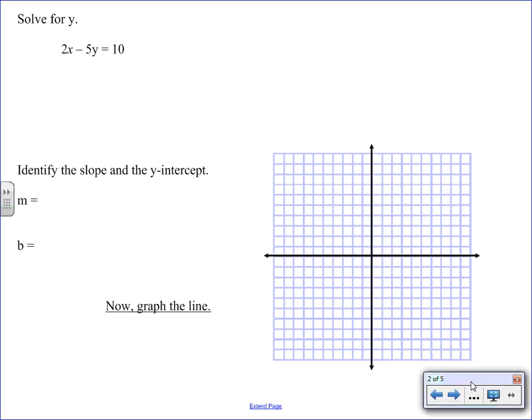If you look at the equation that you're given, 2x minus 5y equals 10, we can't really graph that easily until we get it into slope-intercept form, which is just a fancy way of saying we want to solve for y. So let's go ahead and do that for this equation.